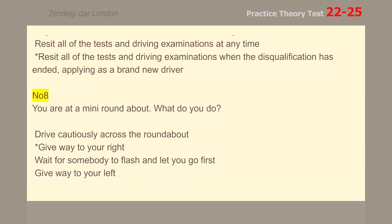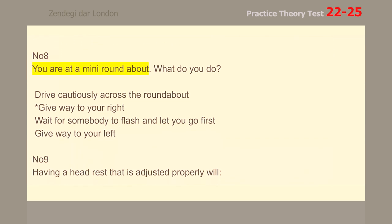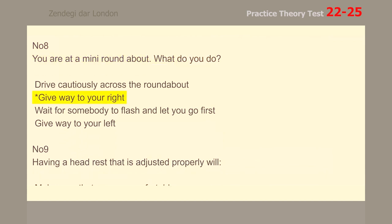Number 8. You are at a mini roundabout. What do you do? Give way to your right.